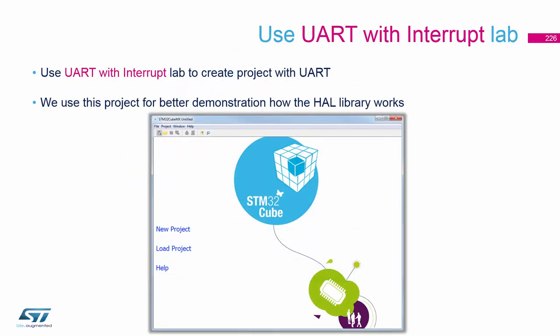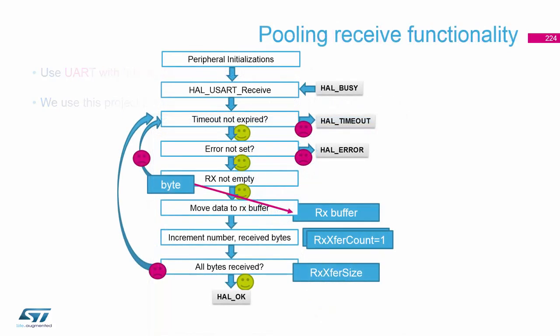This is an example of how the polling works in the HAL library. You see, this is definitely a blocking function because we always need to check the state of the periphery, which is not effective.